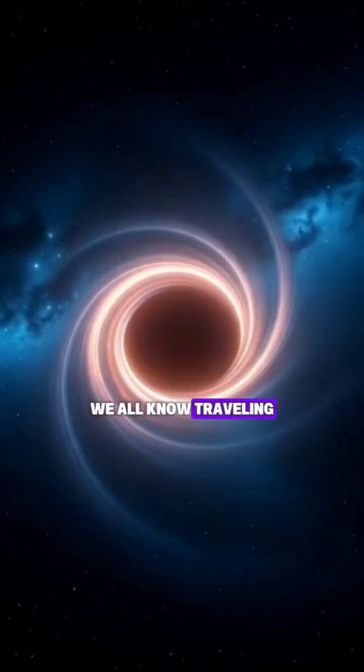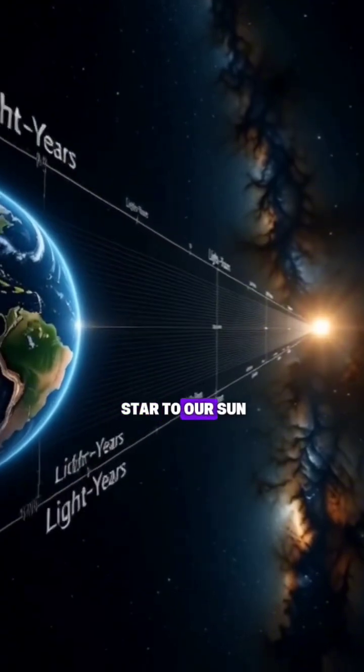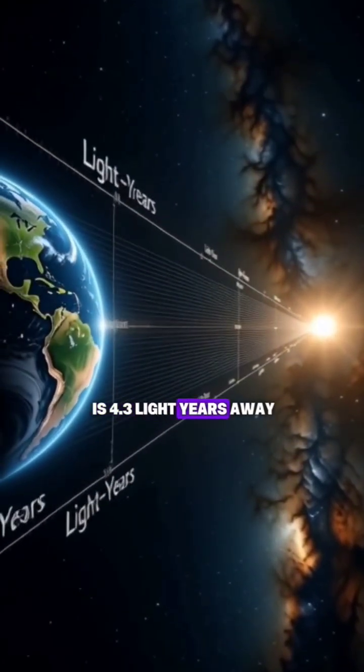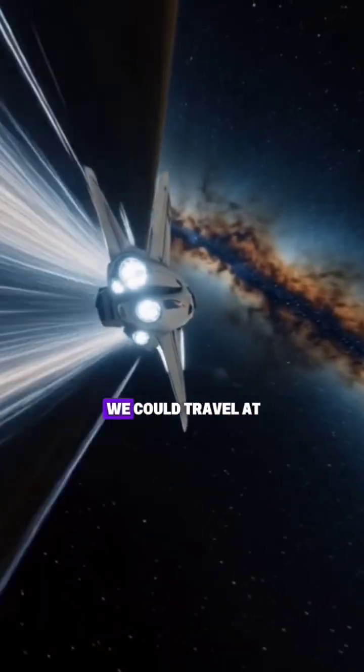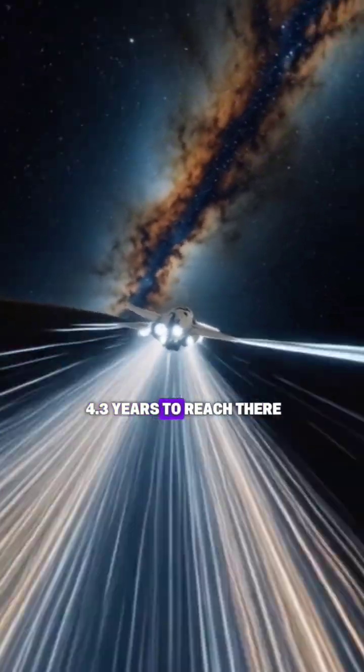We all know traveling at the speed of light is nearly impossible for humans. The nearest star to our sun is 4.3 light years away, which means even if we could travel at light speed, it would still take 4.3 years to reach there.